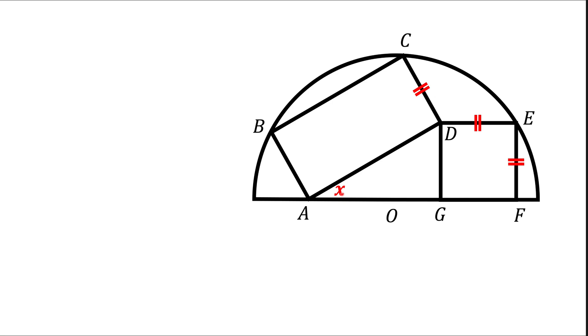Here we have a half circle, and we have a rectangle ABCD and a square DEFG inside of that circle. And we ask to find this angle X.